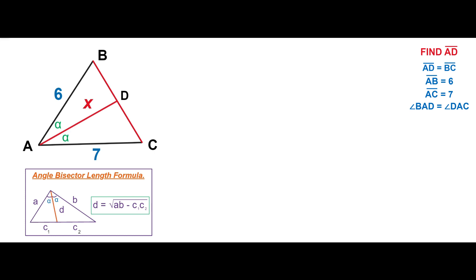Let Y denote the length of the segment BD. Since the segments AD and BC are congruent, the length of the segment DC is going to be X minus Y.